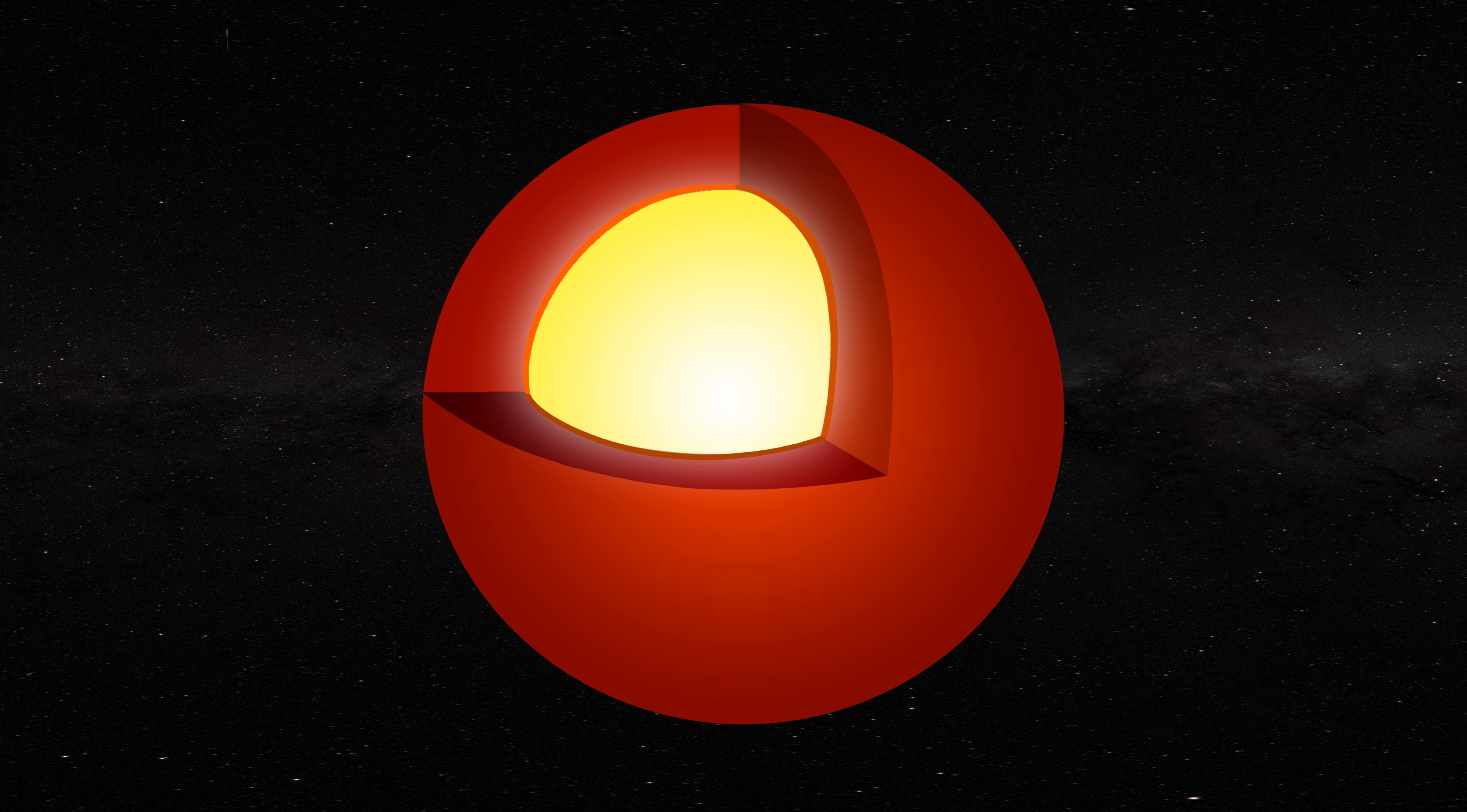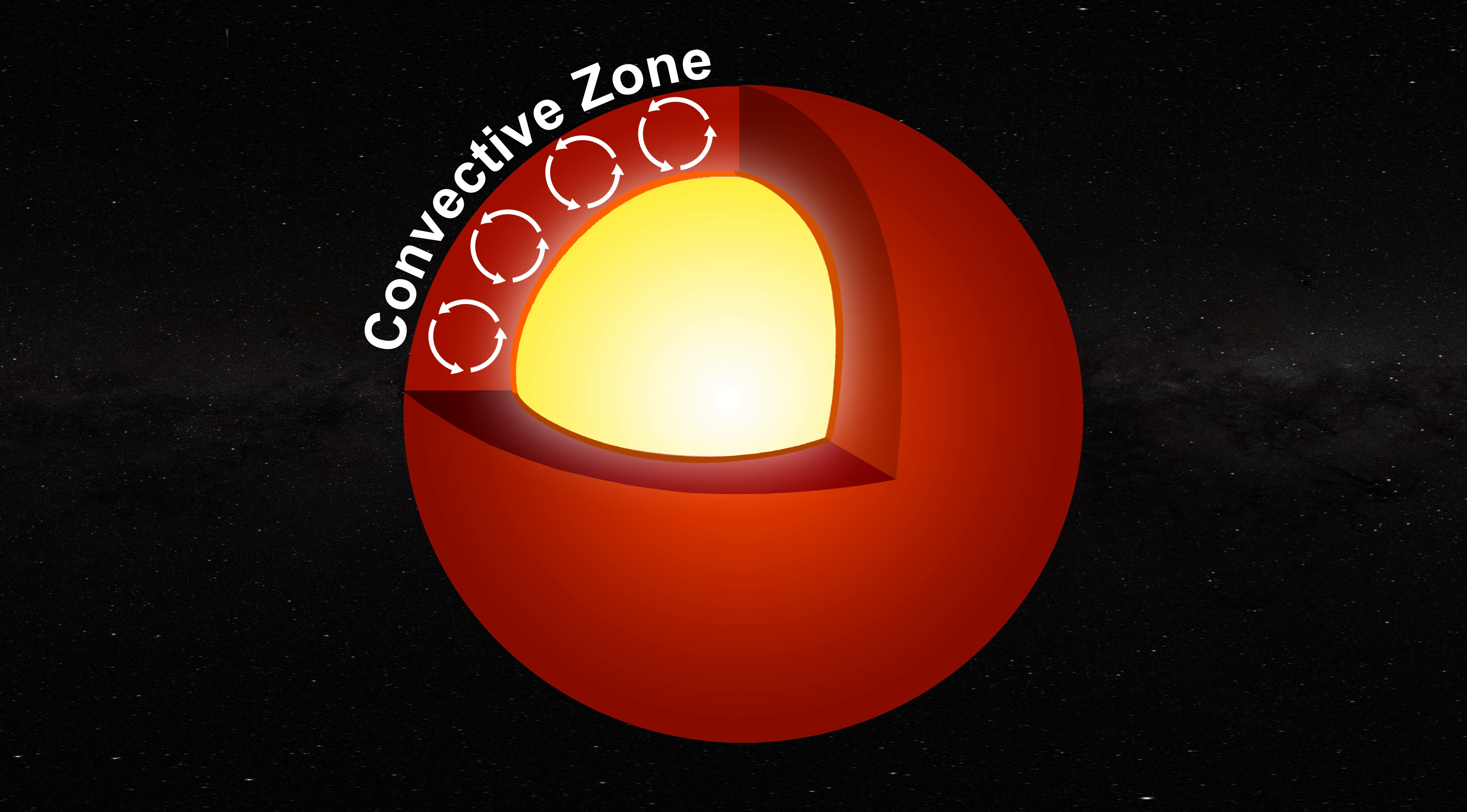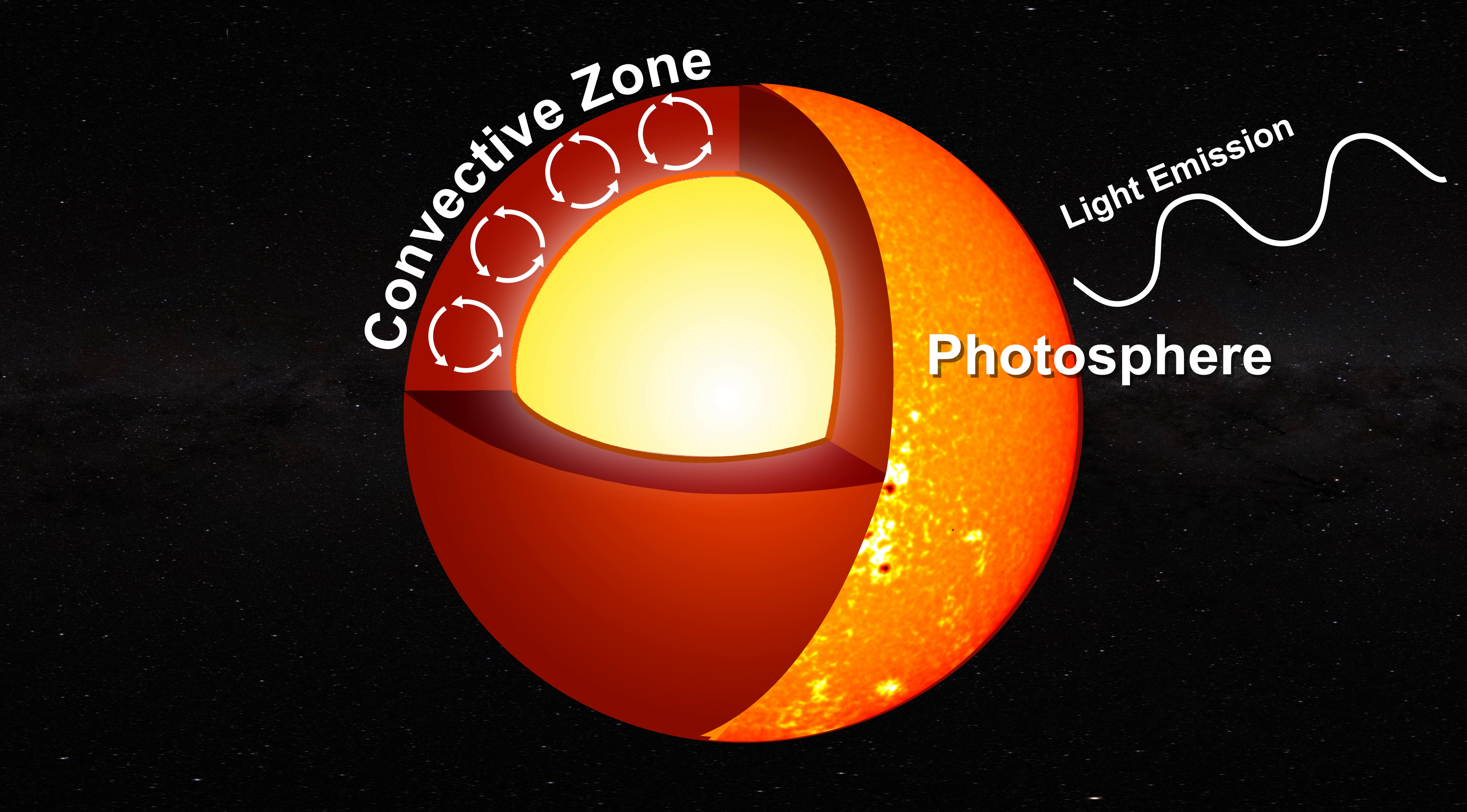Above this relatively thin tachocline rests the convective zone. Like a pot of water on the stove this liquid metallic hydrogen flows to carry heat convectively from the core to the photosphere where it can be dissipated as light. The presence of the convective zone indicates that the solar core is constantly attempting to dissipate its heat.